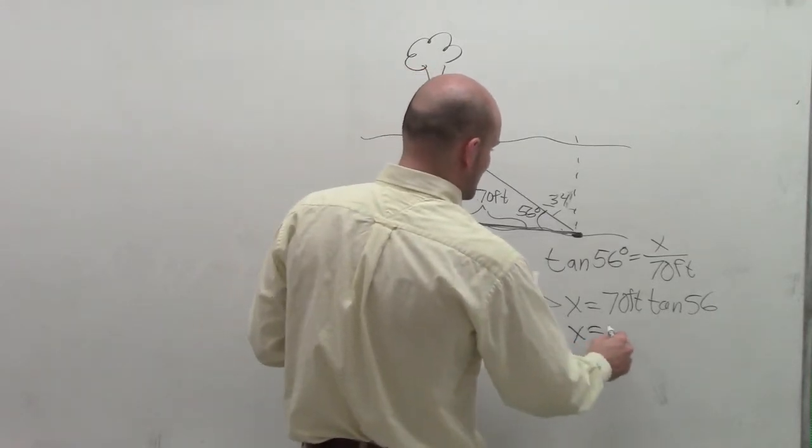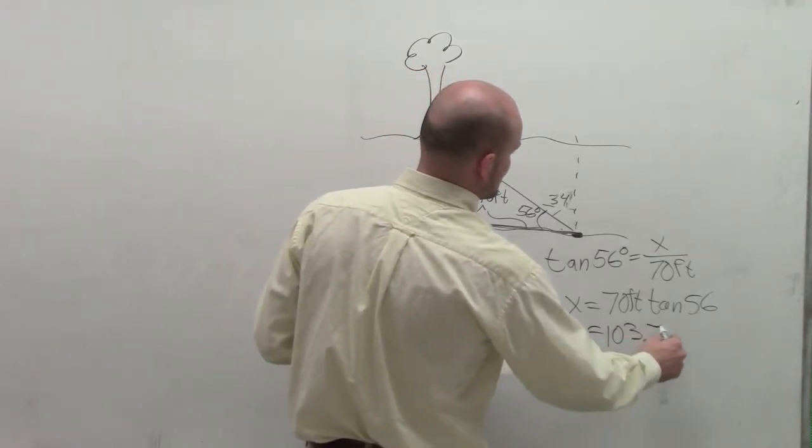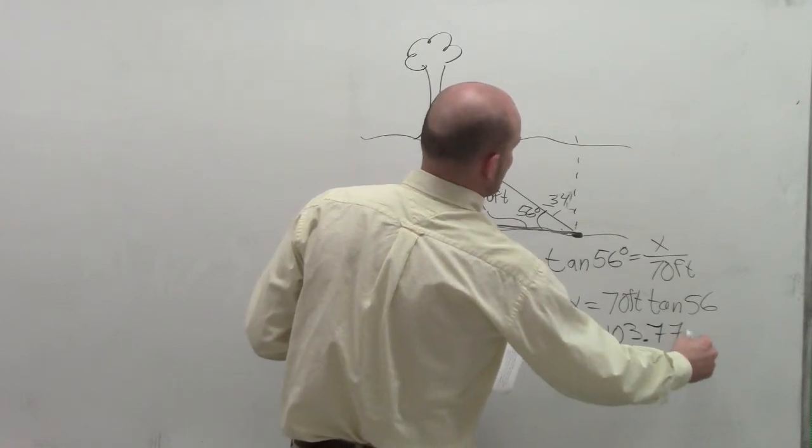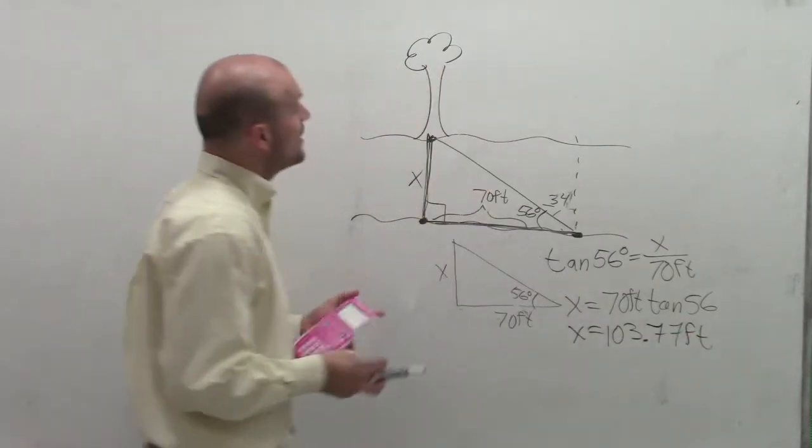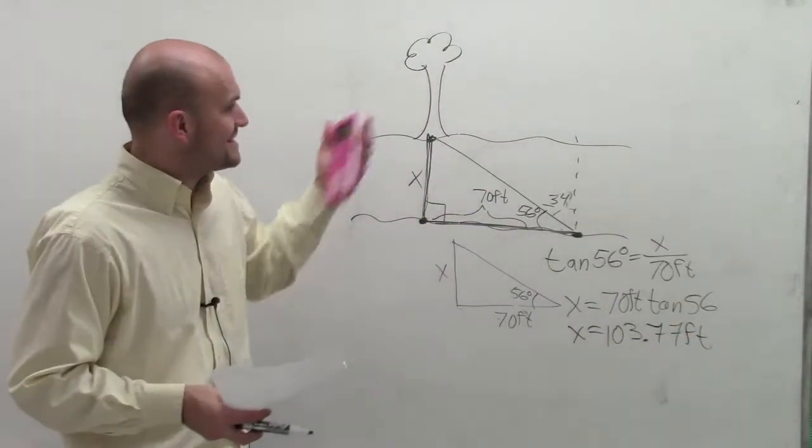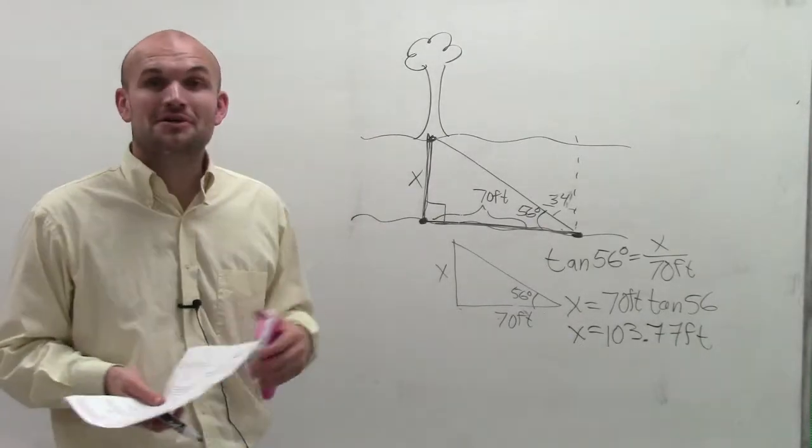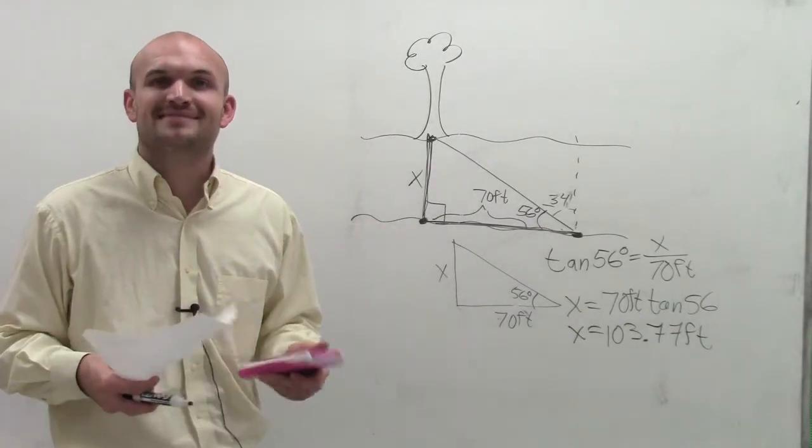Therefore, x equals 103.77 feet. So there you go, ladies and gentlemen. That's how you use a little bit of bearings and a triangle to solve your problem. Thanks.